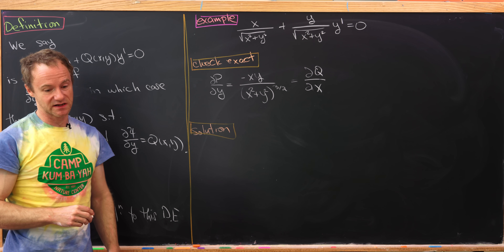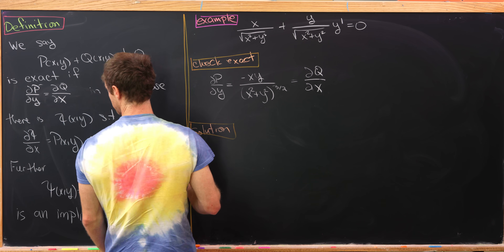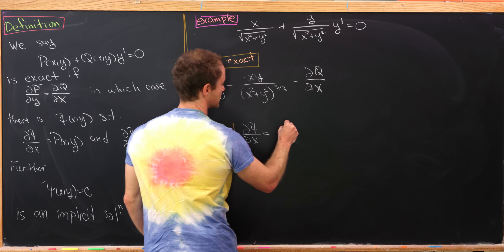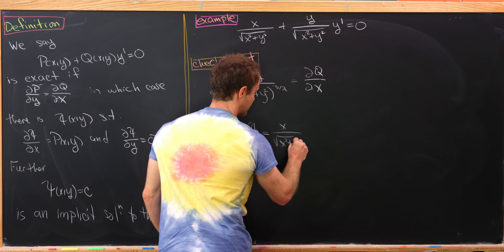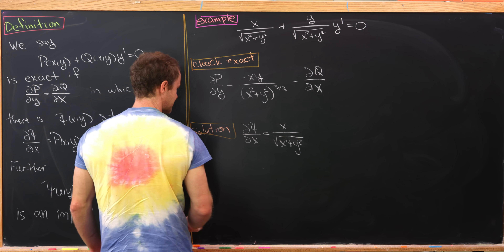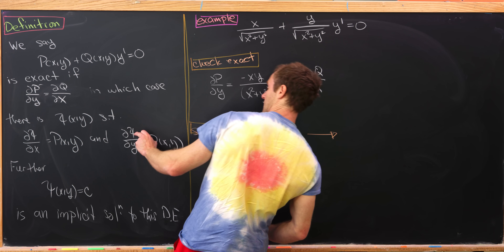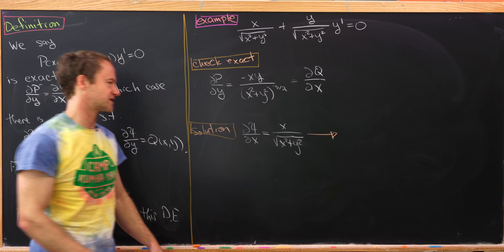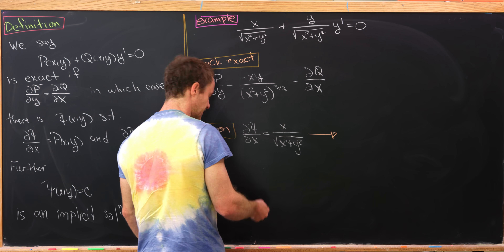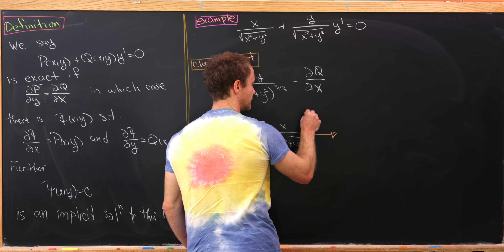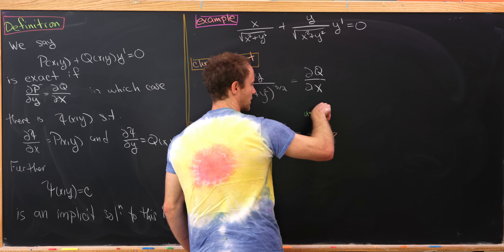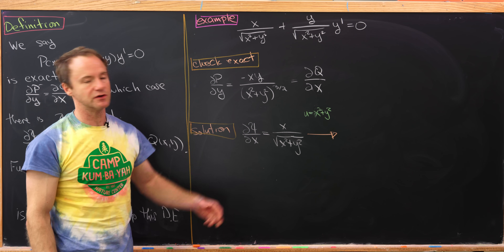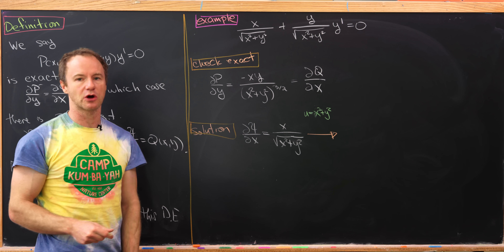Now that we've checked that it's exact, let's go ahead and find a solution. We need to look at this equation: partial of psi with respect to x equals x over root x squared plus y squared, and just see where that takes us, keeping in mind that eventually we'll impose the condition that the derivative with respect to y is q. Let's take the antiderivative with respect to x. We could use a simple u-substitution, setting u equal to x squared plus y squared. Notice half du will be this x times dx term, which would show up when doing the antiderivative.